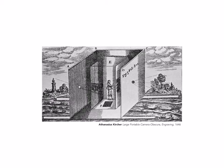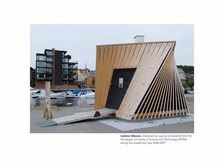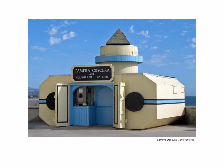Here we see another version of the same kind of room. This one has two holes placed in it. This is a camera obscura that was built just a few years ago in Norway, and this is one located in San Francisco at the ocean.